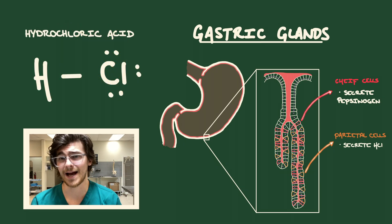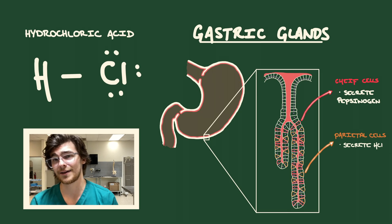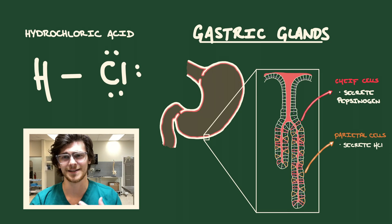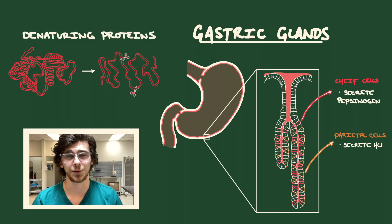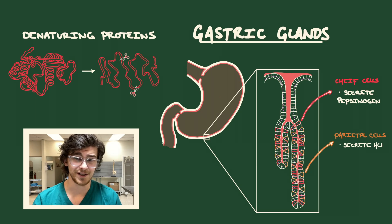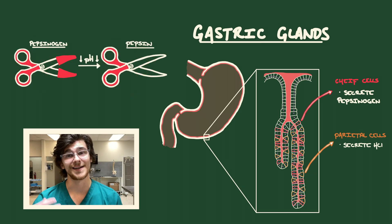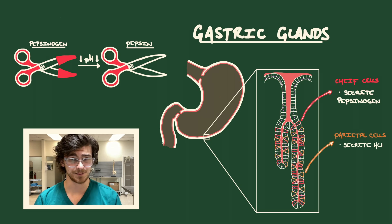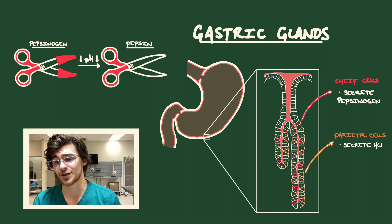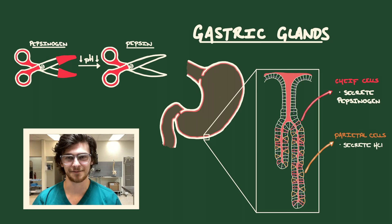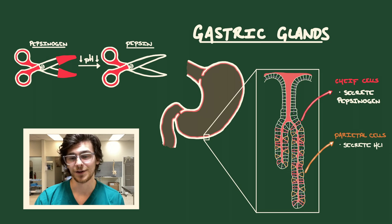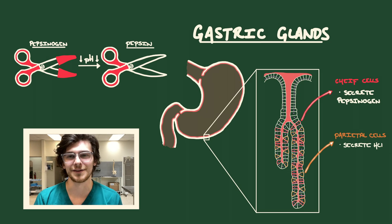HCl, or hydrochloric acid, is secreted by the parietal cells of the stomach. This creates an acidic environment which serves to denature, or unfold, any ingested proteins — and denatured proteins are much easier for enzymes to work with. Pepsinogen is an inactive protein-cleaving enzyme released by the chief cells of the gastric glands. It is activated in acidic environments, becoming pepsin, where it can carry out its protein-cleaving function.